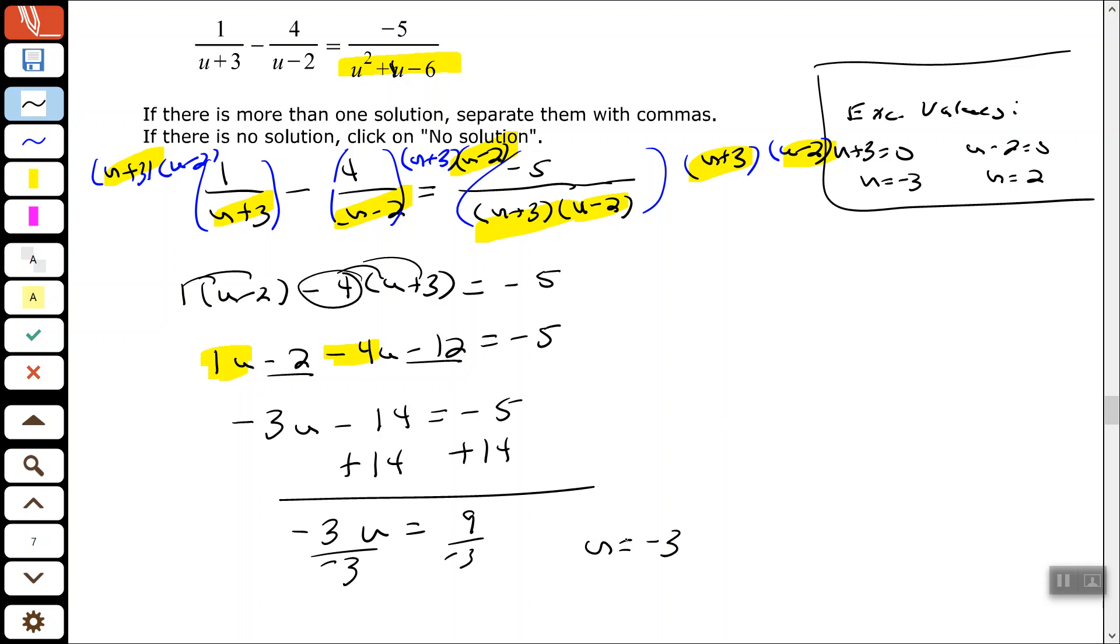So my solution that I came up with is an excluded value. Therefore, that's the only solution I had and that would be no solution because if I replaced u in my equation with that, one or more of those fractions would end up being undefined with a zero in our denominator. So u equals negative 3 is not a valid solution. So our answer is no solution.